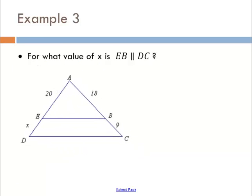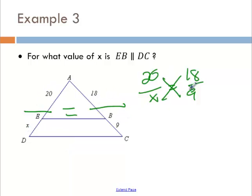In example 3, we need to find x to make them parallel. But I don't have anything about the bases, so I can just set up a proportion. 20 over x equals 18 over 9. And for side splitter, one thing that I do a lot is, the way it's written, I just write that fraction. 20 over x, 18 over 9. When I cross multiply, 180 equals 18x. So x is 10.